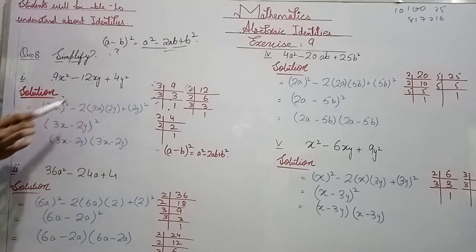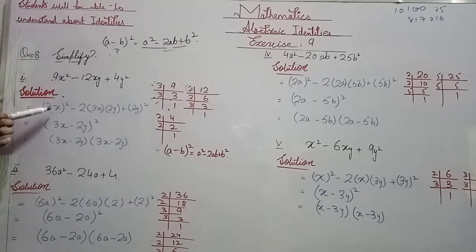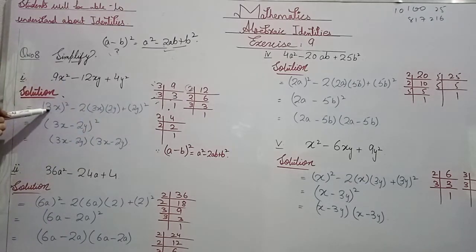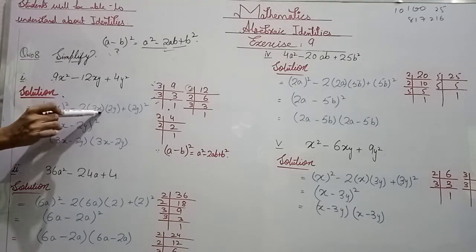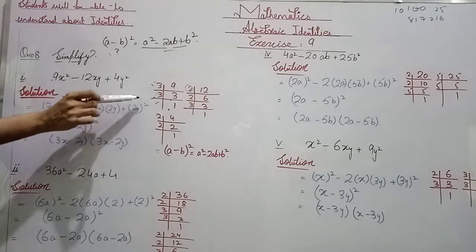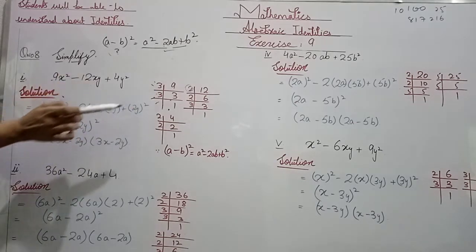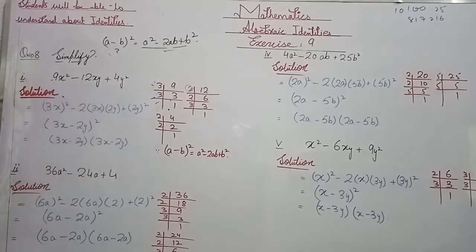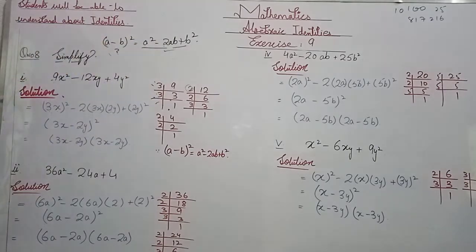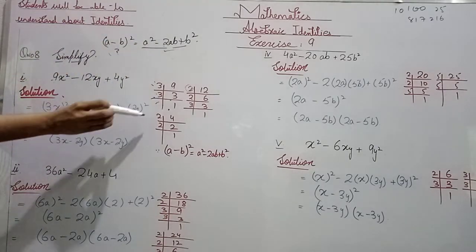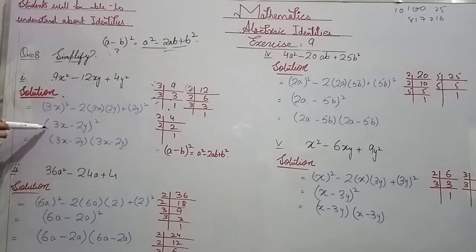Here b is 2y, so a² means (3x)² minus 2ab means 2 into 3x into 2y, plus (2y)² means b². So we have a² minus 2ab plus b², which we can close as (3x minus 2y)². So the open expression has been closed into (3x minus 2y)².